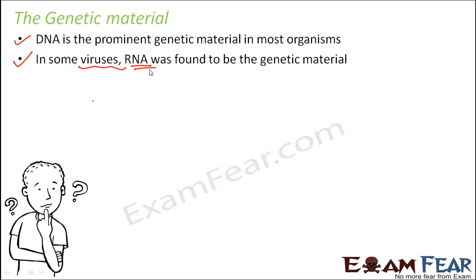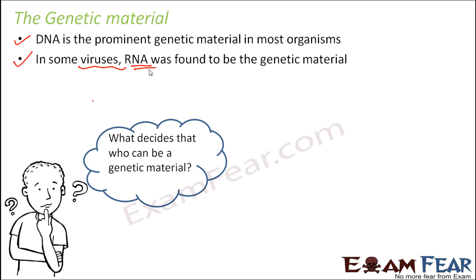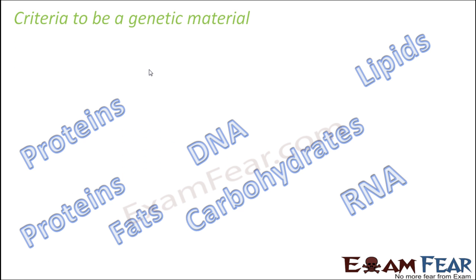So the question was: sometimes DNA acts as genetic material, sometimes RNA does the same. What decides which molecule can be a genetic material? Why is it that neither protein nor carbohydrate nor lipids can be genetic material? It is only the nucleic acids which have the property to behave as a genetic material. There were certain criteria which defined who can be a genetic material — whichever molecule satisfies all these criteria can be a genetic material.